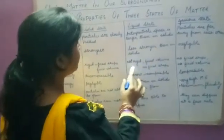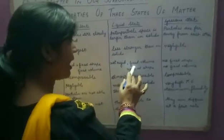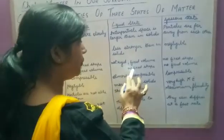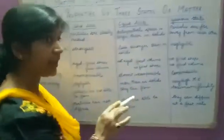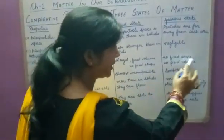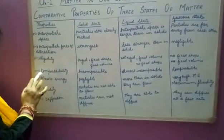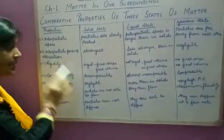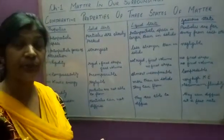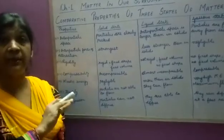In liquid state, matter is generally not rigid. Liquids have a fixed volume but no fixed shape — they can occupy the shape of the container in which they are kept. In gaseous state, matter has no fixed shape and no fixed volume. The fourth property is compressibility, which is the property of matter by which particles can come close together by applying pressure.